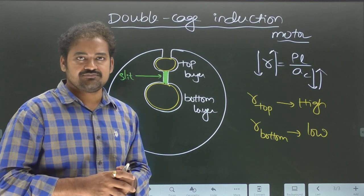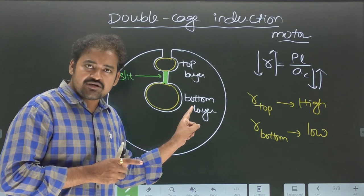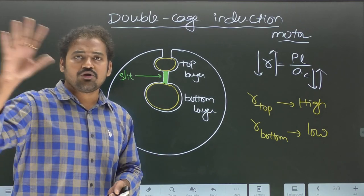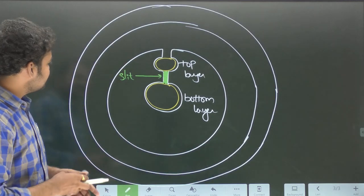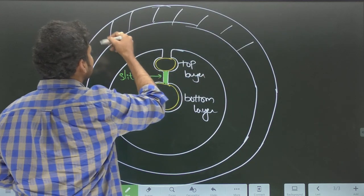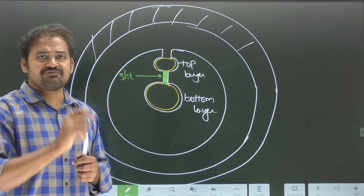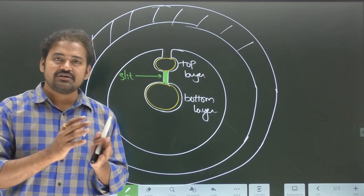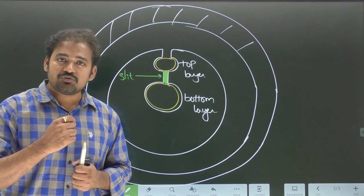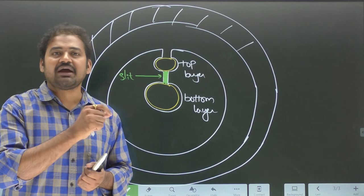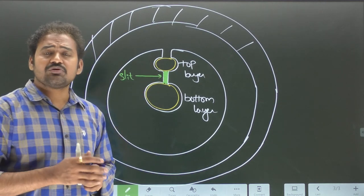Now let us talk about leakage flux — which layer will offer higher leakage and which will offer lower leakage. Note that this is the rotor design of a squirrel cage rotor; the stator design is the same between a normal squirrel cage machine and a double cage induction motor. Looking at the complete design, we have the stator magnetic core, the rotor magnetic core, and the air gap medium between the two. We want to talk about rotor leakage flux — flux linking only the rotor magnetic circuit.